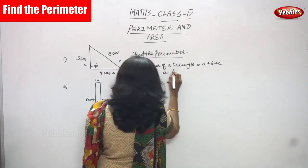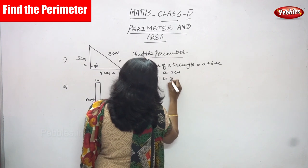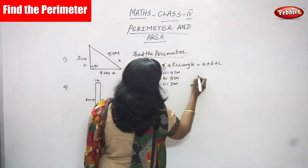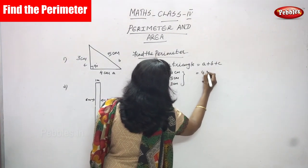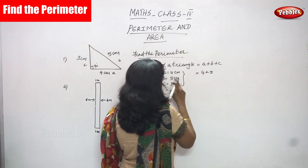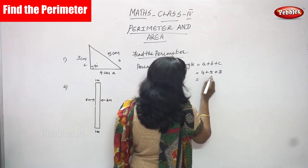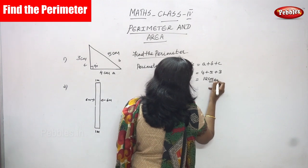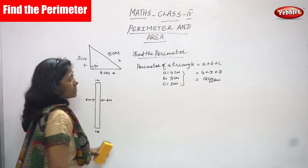a is equal to four centimeters, b is equal to five centimeters, and c is equal to three centimeters. Substituting: four plus five plus three. Four plus five equals nine, and nine plus three equals twelve. So the answer is twelve centimeters. The perimeter of the right triangle is twelve centimeters.